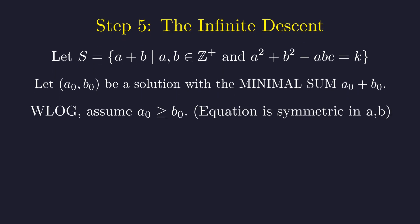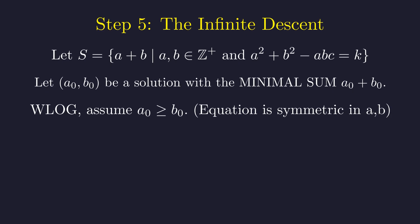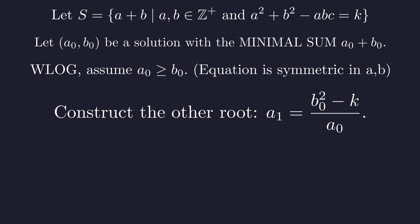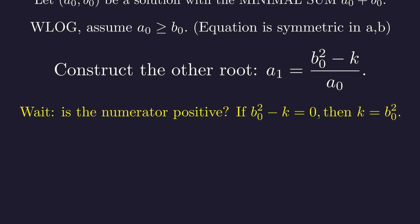Let's choose that solution with the smallest possible sum and call it the pair a0 and b0. Since the equation is symmetric in a and b, we can label them such that a0 is at least b0 without changing their minimal sum. Now we generate the other root, a1, for this solution pair. But first, a crucial check.